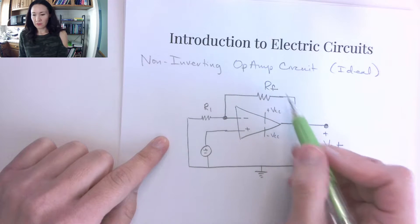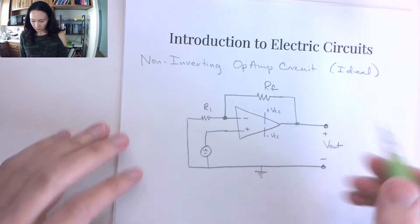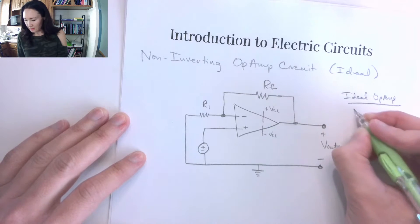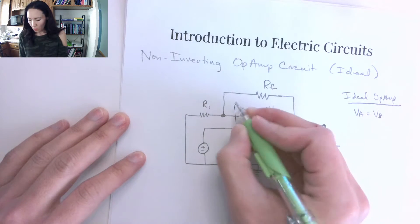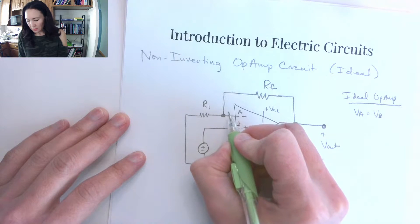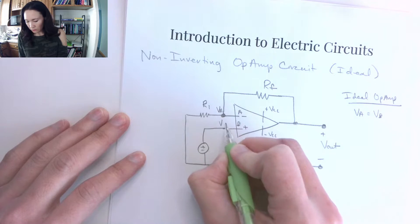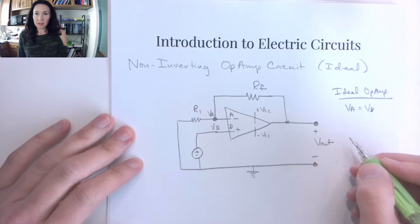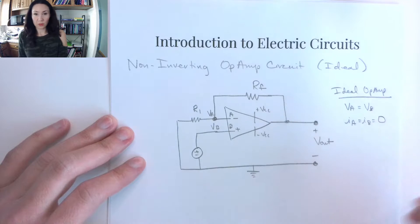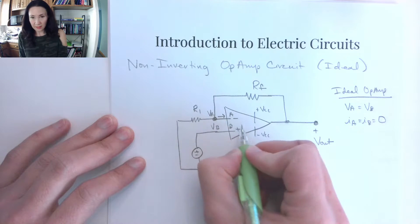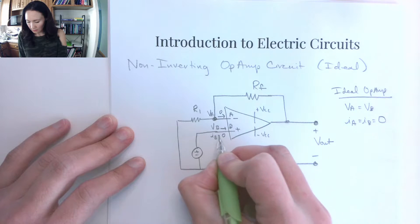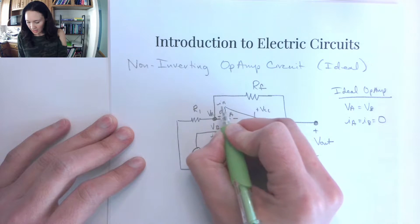We have this feedback resistor on the negative feedback loop, so we get to use the ideal op-amp approximations. Those are: VA is equal to VB — calling this input A and input B — so the voltage at input A equals the voltage at input B. The next approximation is that the current into input A equals the current into input B, and both equal zero. So IA equals zero and IB equals zero.